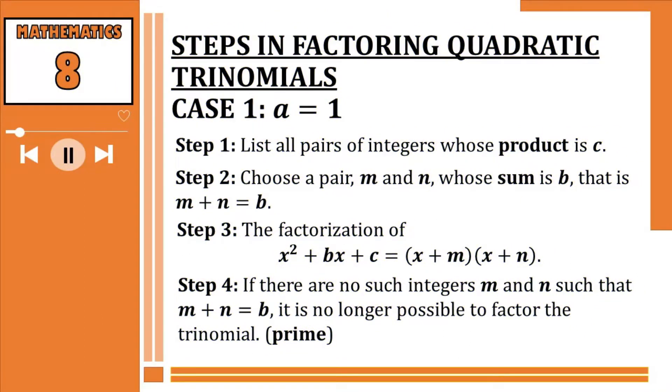When we say quadratic, the highest exponent of the polynomial is two. When we say trinomial, we are given three different terms. Here are the steps in factoring quadratic trinomial Case Number One: first, we will focus on the constant term, or the last term.